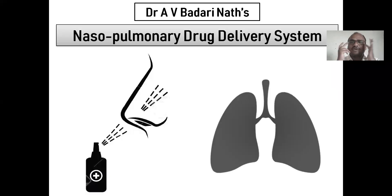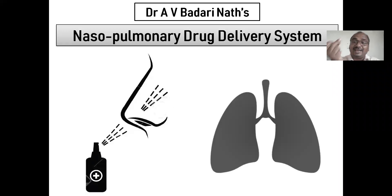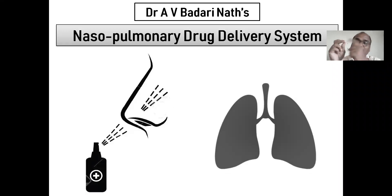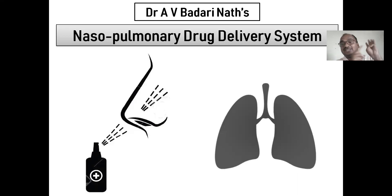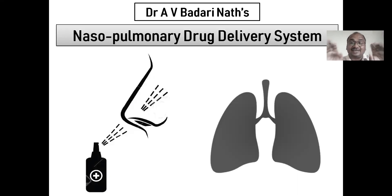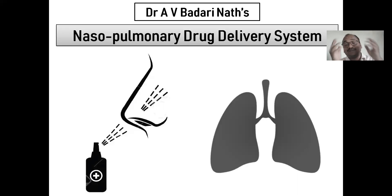Eye: ocular drug delivery. NOS: nasal drug delivery. Mouth: oral drug delivery. Even nail also — nail drug delivery system. Vaginal drug delivery, rectal drug delivery. Just imagine: intrauterine drug delivery also. Lungs: pulmonary delivery system.